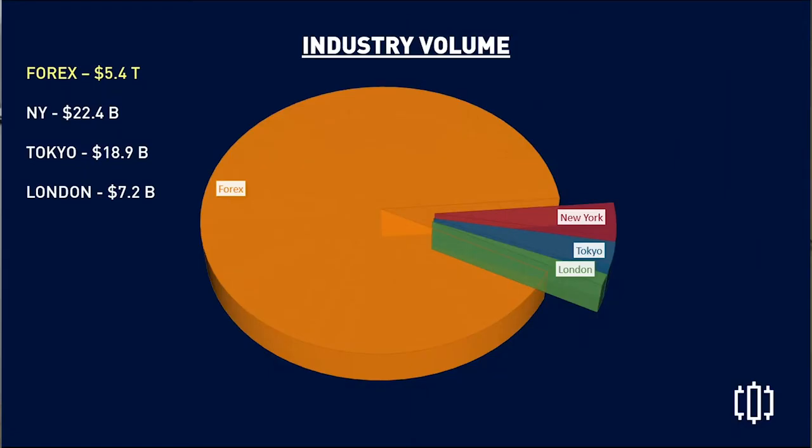Forex is a $5.4 trillion US dollar industry, so it has very high liquidity. That's why some people say it's very risky — because of how large the market is. The goal is not to get the entire $5.4 trillion, but really just to get a piece of the pie. That's our goal — just to grab our chips from that $5.4 trillion.